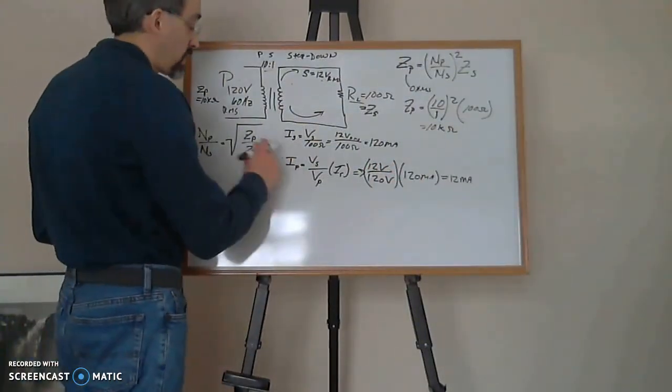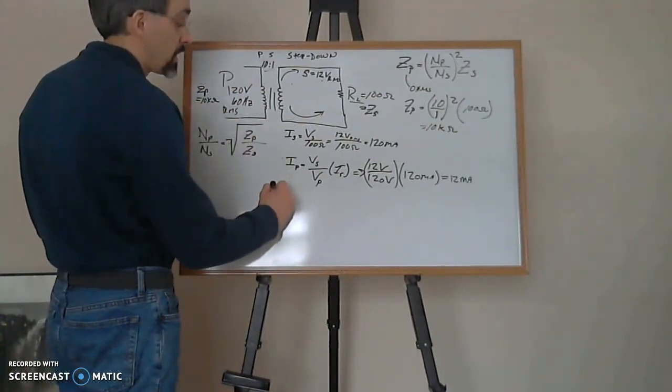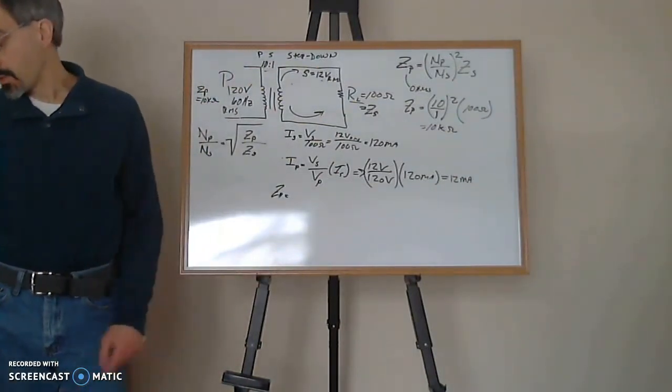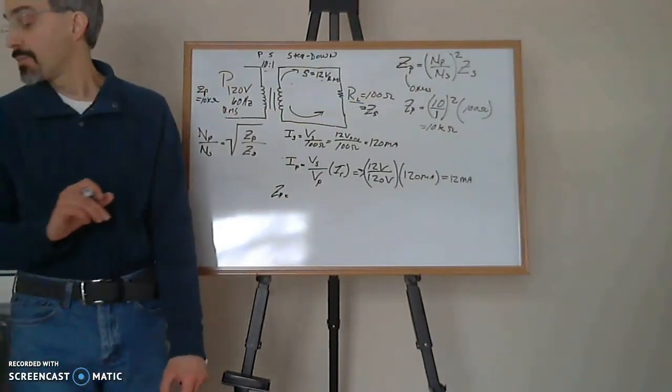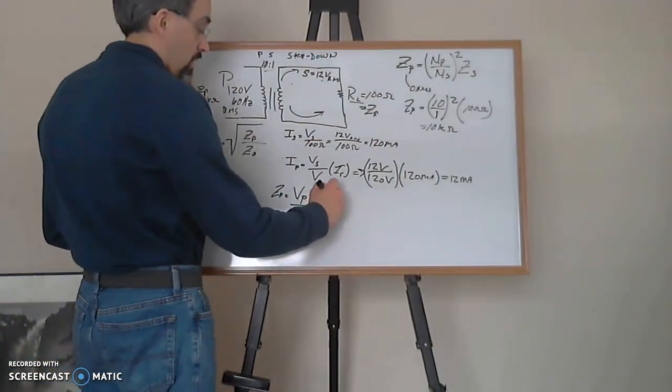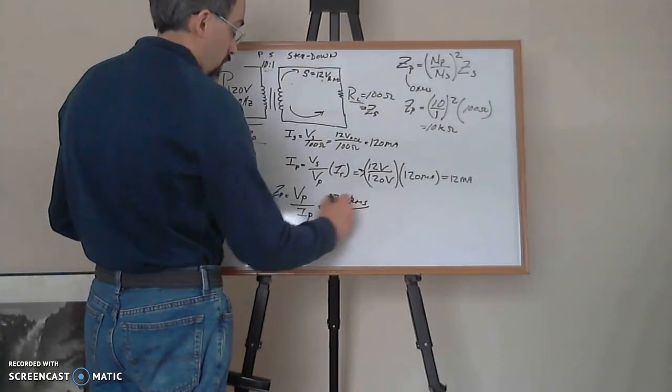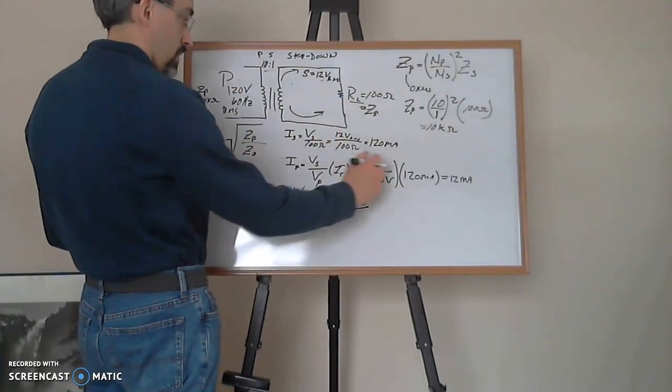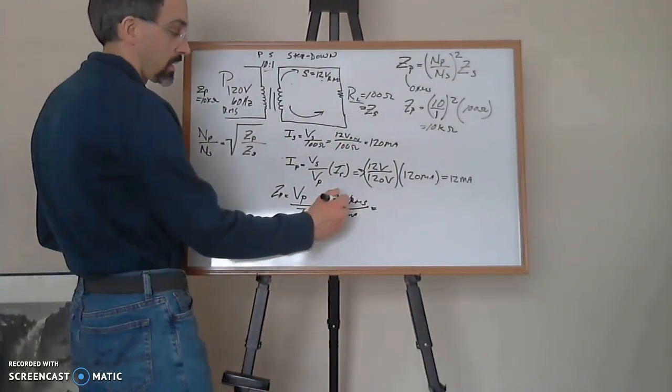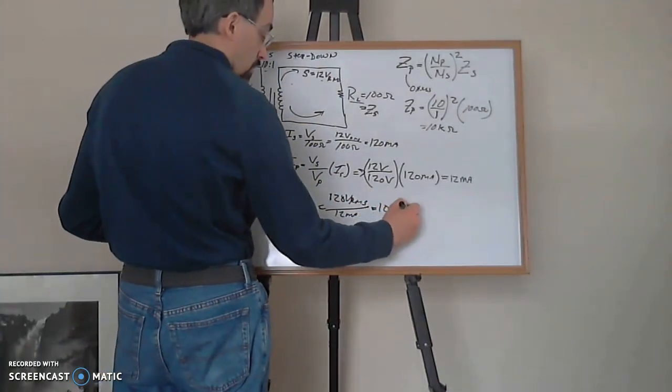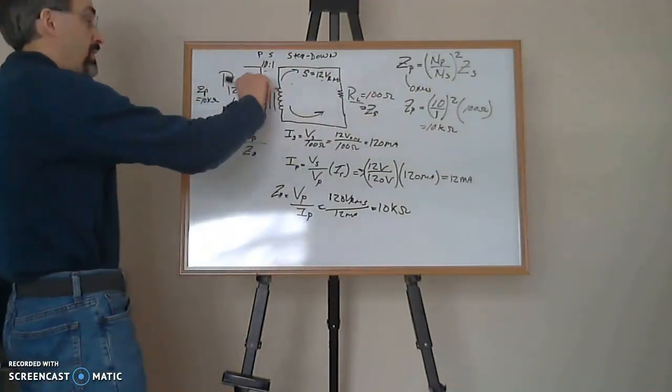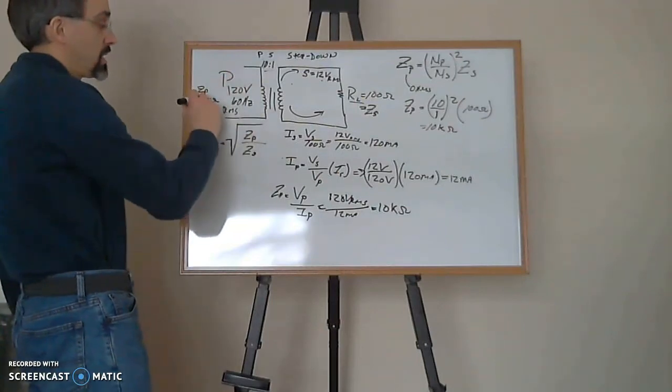Now to check that this is actually 10k ohms, Zp is going to be equal to Vp over Ip. So if I take 120 volts RMS divided by Ip, which was 12 milliamps, this is going to be right on the money. This is going to be about 10k ohms, so that does check out. This 100 ohms when it's reflected back, the input Zp is 10k ohms.